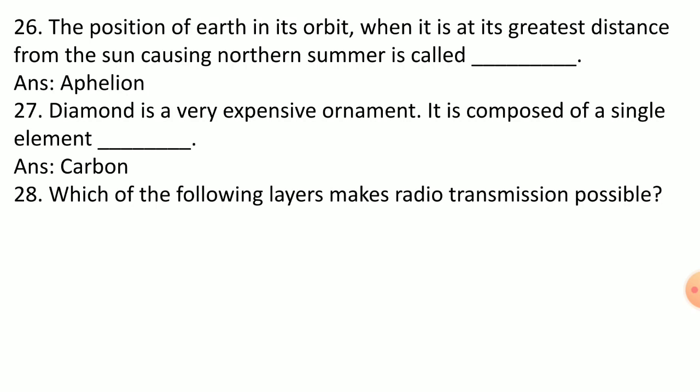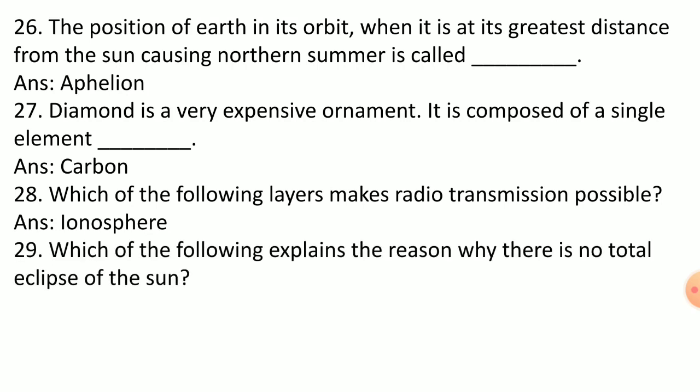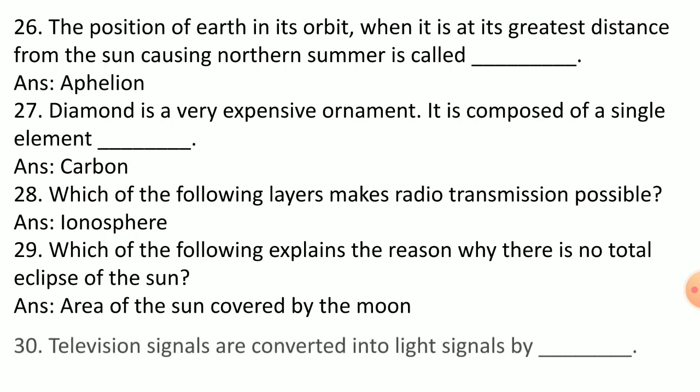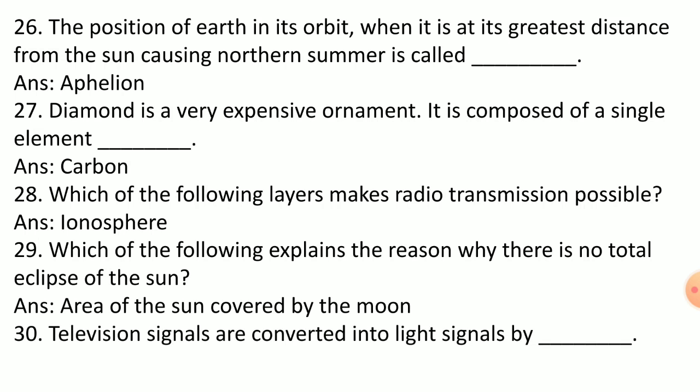The ionosphere layer makes radio transmission possible. Television signals are converted into light by photodiodes. Photodiodes are a small device that is located in television. The television signals are converted into light by photodiodes.